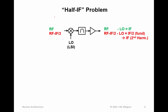The half-IF problem is characteristic of all superhet architectures. For low-side injection, the RF frequency goes to the IF frequency as the difference of RF and LO. However, if a signal exists at RF minus IF divided by 2, the output goes to IF divided by 2. With limited second-order linearity, we get a second harmonic of that signal at the IF frequency. So the half-IF problem is that signals at this frequency, because of limited linearity in the amplifier and mixer stages, result in a signal overlapping the desired signal.